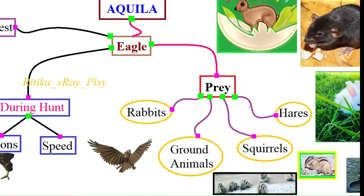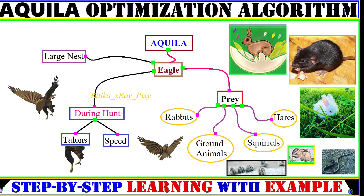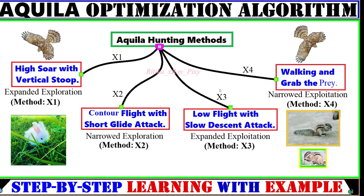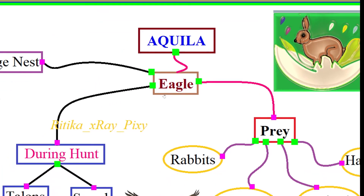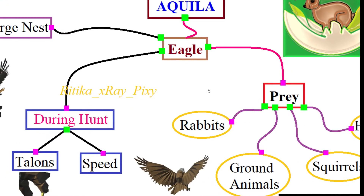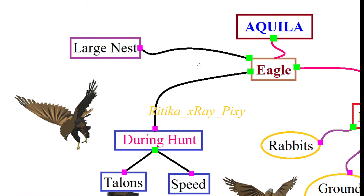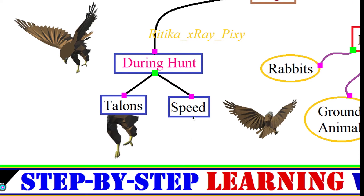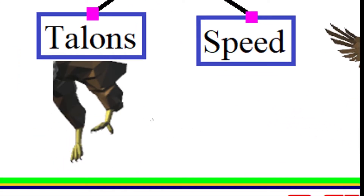As this algorithm is inspired by the Aquila's behavior in nature, we will first understand a few facts about Aquila and their hunting methods. Aquila is the genus of the true eagle. They are dark in color — that is dark brown. In the Northern Hemisphere, Aquila is the most popular bird of prey. They create their nest in high positions or in the mountains, and during a hunt they use their speed and talons to grab the target.